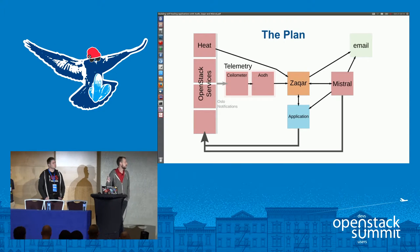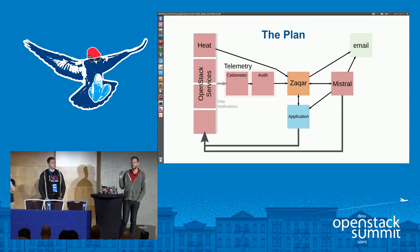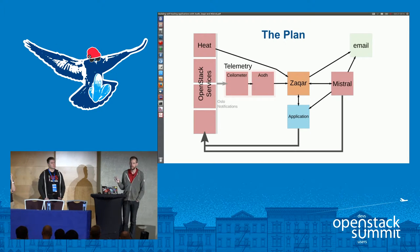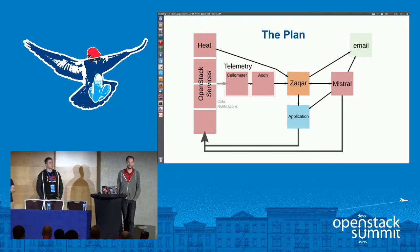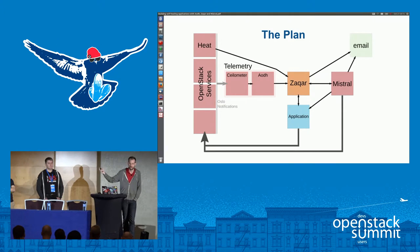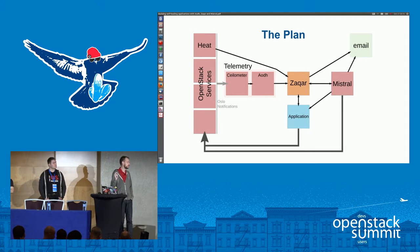This also solves the authorization problem: with pre-signed URLs in Zaqar, you can give your application code on another server a pre-signed Zaqar URL, and the only thing you can do with it is pump messages into that one Zaqar queue, triggering only that one workflow. It gives you an extremely fine-grained way of locking down permissions. Mistral can call any API in OpenStack, so this whole loop gives you an extremely flexible way of taking actions based on events in the cloud.